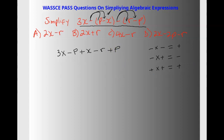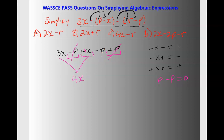And then negative times negative gives us positive P. Now we are going to combine like terms. Realize that this P and this P are of equal number, so P minus P equals 0 — they go away. And here we have X plus X, that means it's one over there, so 1 plus 3 gives us 4X. And this one doesn't have a friend, so we bring it down: minus R. That gives us our final answer.